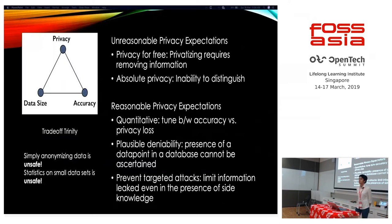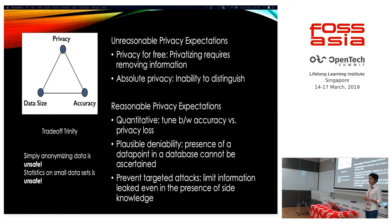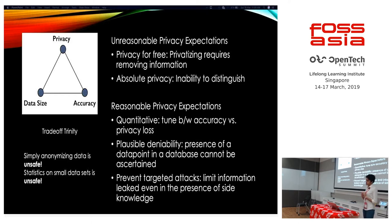When we look at privacy, we need to familiarize ourselves with what I call the privacy trinity — you cannot have all three properties at once; you can at most choose two. You cannot have privacy, a good data size, and accuracy together. Privatization requires removing at least a small amount of information. And the idea of absolute privacy is also a myth — if you have absolute privacy, you would also be unable to distinguish between two different data points.